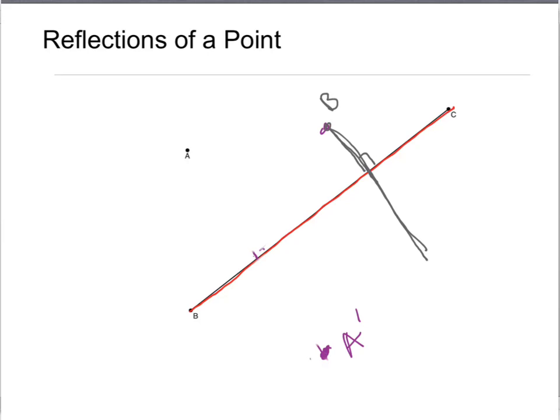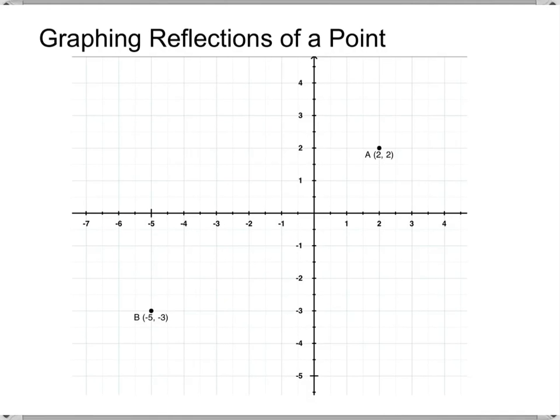Take a measurement tool, measure that distance, and that gives you the point reflected over the line. This technique works for reflecting a point in free space — not on a coordinate plane. We'll be able to do it on a coordinate plane much more easily.